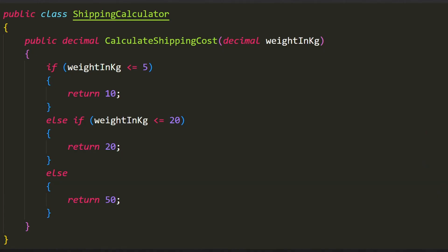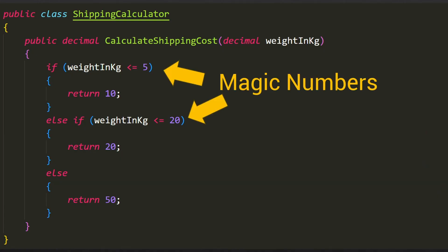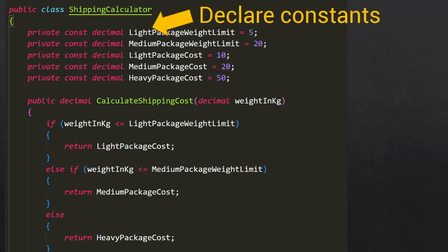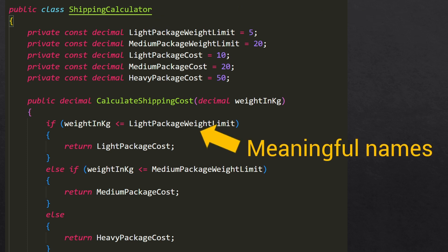Using magic numbers and strings in your code is also likely to confuse the reader. It's way easier to declare that value as a constant or a variable and then use that variable throughout your code base so that its name can be a clear indication of what that value is for.